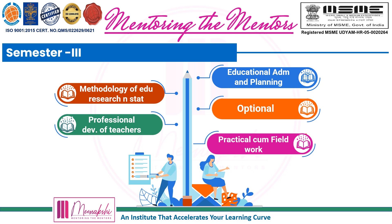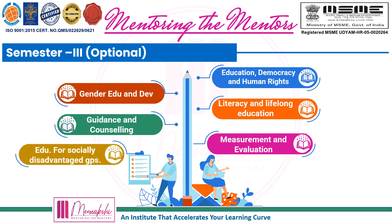In the third semester, the fourth paper is optional, and six options are available: Gender Education and Development, Guidance and Counseling, Education for Socially Disadvantaged Groups, Education Democracy and Human Rights, Literacy and Lifelong Education, and Measurement and Evaluation. In most colleges, the college itself decides the optional subject for students. Most colleges offer Guidance and Counseling or Gender Education and Development, and some offer Measurement and Evaluation too.